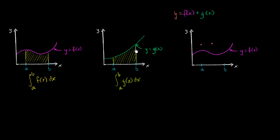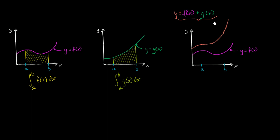When x is equal to b, g of x is about that big, so I have to add that length — which looks something like that. So if I were to add the two functions together, I get a curve that looks something like this, maybe just keeps going higher and higher. This is a pretty good approximation of the curve of f of x plus g of x.